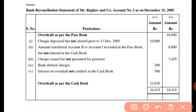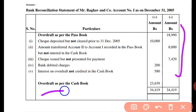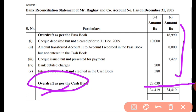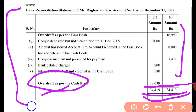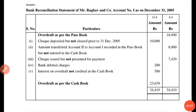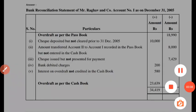Now we can see that the sum of the credit side is greater. So here there will be overdraft as per cash book of Rs. 23,639. You have to write the sum on both sides and then draw a double line. I hope you have understood the concept of this question. Thank you students for watching this video.